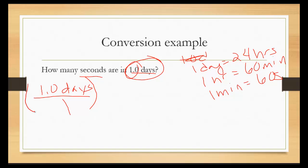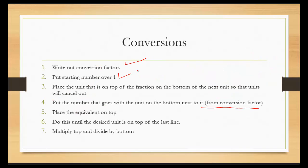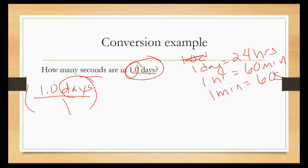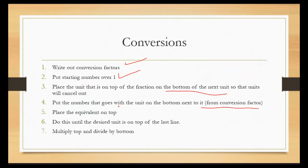Put it over 1 and we're turning it into a fraction. That's all we did. Place the unit on the top of the fraction on the bottom of the next unit so that the units can cancel out. So I have days on the top. That means I want to put days on the bottom. So I'm going to look at our conversion factors and I'm going to find days. It's right here. The number 1 goes with it. So that's going to go on the bottom with it.